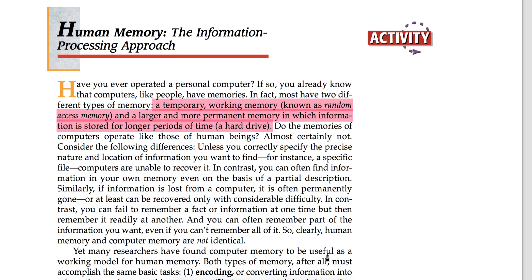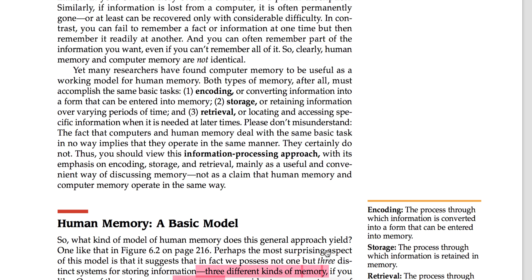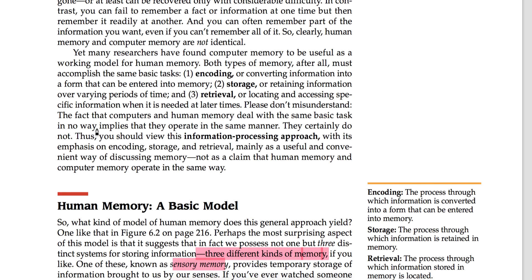So this is a difference, but memory is still compared with the computer because the process of storing information in memory — it is stored and then retrieved — is the same process as our memory. First we encode: we change our information to store in memory. Then we store it, and then we try to recall it. The information processing approach emphasizes that our memory involves encoding, storage, and retrieval.